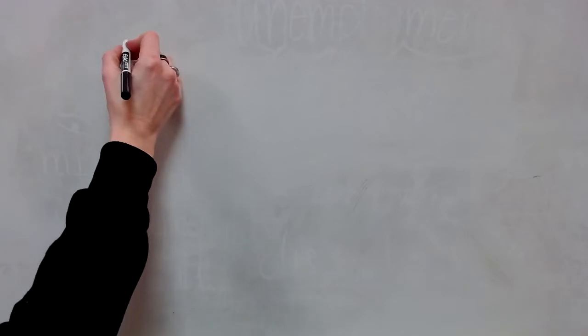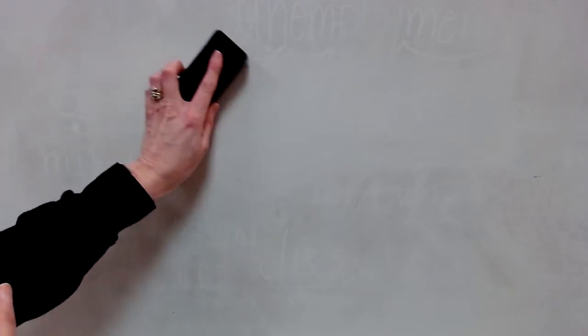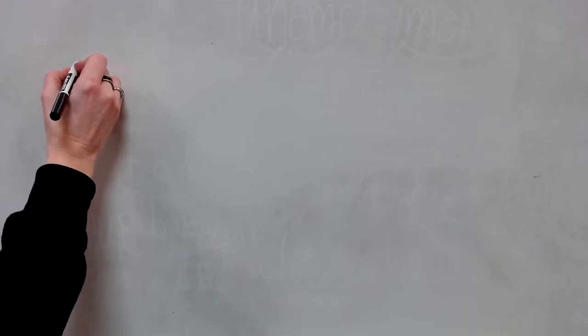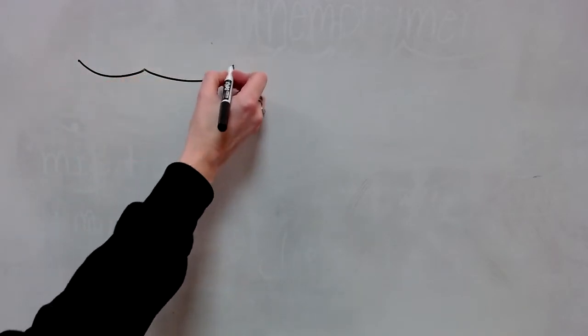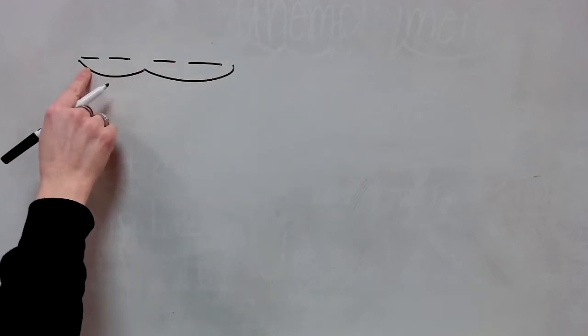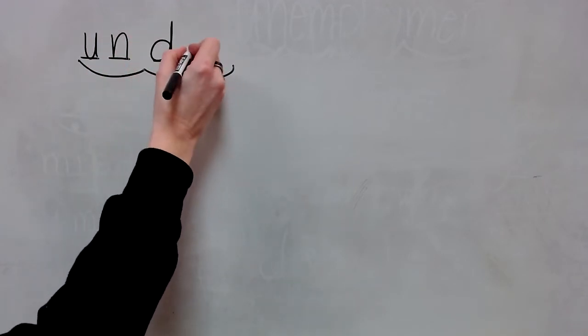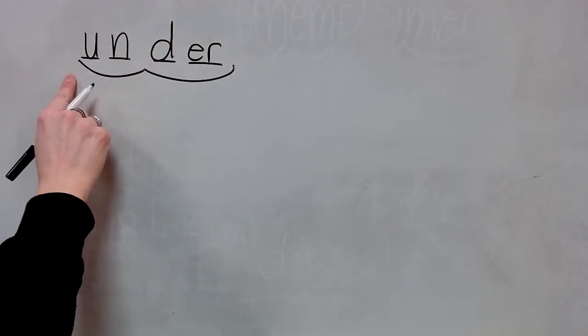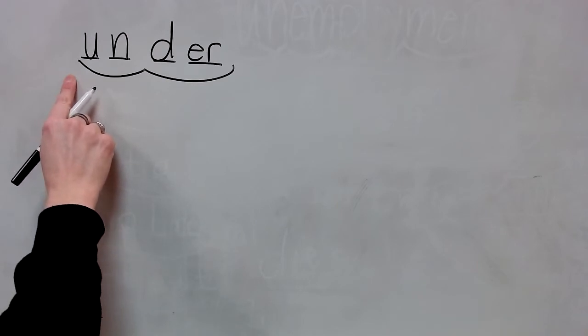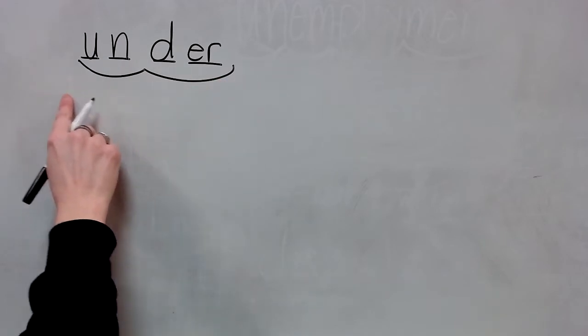Now let's practice spelling these words. All of these spelling words have a vowel-consonant-consonant-consonant-vowel pattern in them. Our first word is under. The syllables are un-der. Let's stretch: under. Write the spelling for under. Under. Check it and correct it. Spell under. Yes, under.